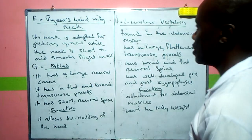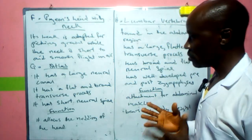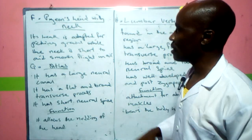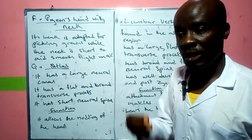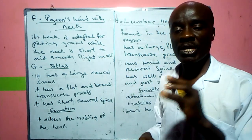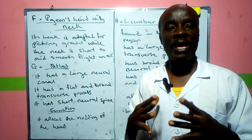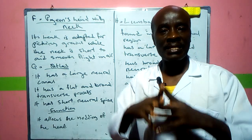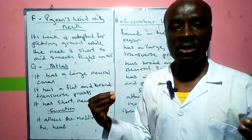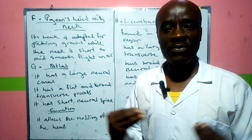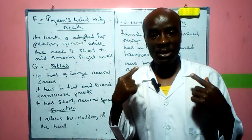Specimen F is a pigeon head with neck. We'll talk about the adaptation of this animal. The beak is designed for picking grains. The neck is short, which helps with streamlining the body when flying. If the neck were long, it would cause air resistance as the bird flies, so the short neck is an important adaptation.